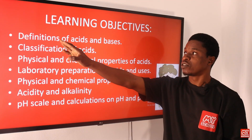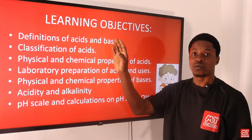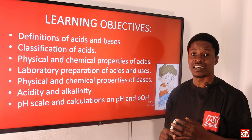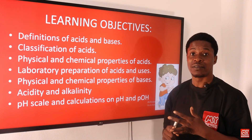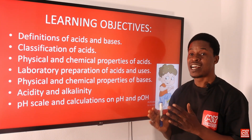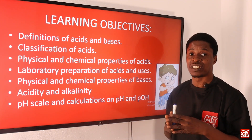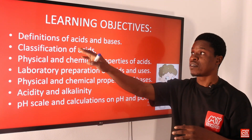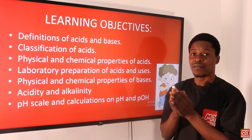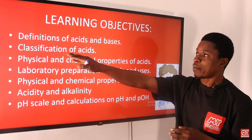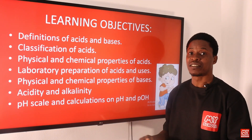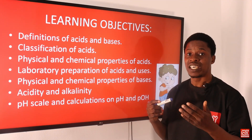Give the different definitions of what acids are and what bases are. There are different definitions — we talk about Arrhenius, we talk about Brønsted-Lowry, we talk about Lewis. They all have definitions for what acids and bases are. At the end of this class you should be able to give their definitions. Then we look at the all-encompassing definition. We also talk about classification of acids — how are acids classified?